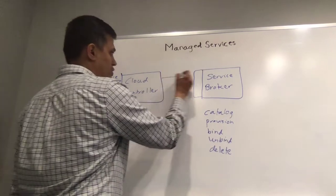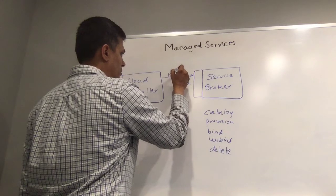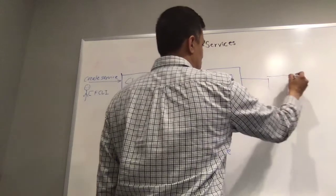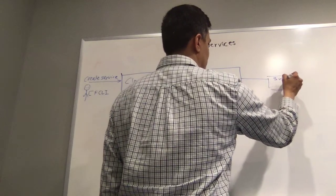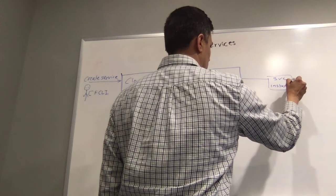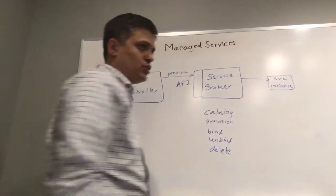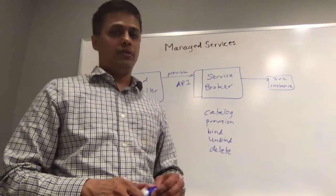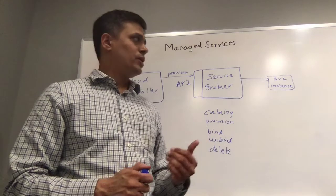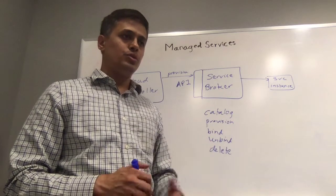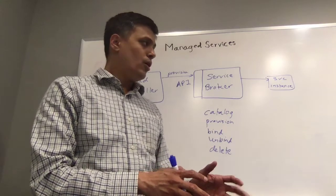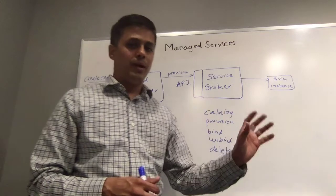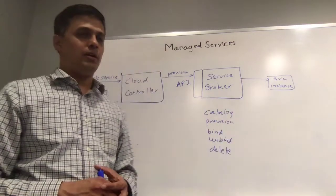The cloud controller will issue a provision command, and in response, the service broker will actually spin up the service instance. What the service broker does to spin up the service instance is left to the implementation of the service broker. For example, in case of a database service, it can choose to create a new database installation, or it can choose to use an existing database installation and only create a database schema for that particular service instance request.